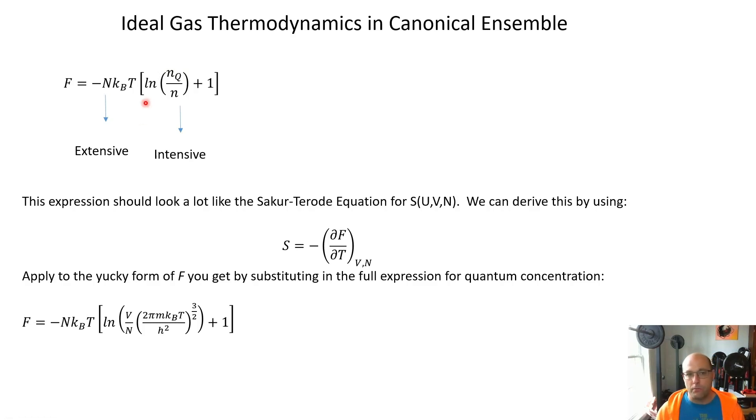Another thing that we should remark upon is the general appearance of this equation reminds us of the Sackur-Tetrode equation, which we derived for entropy as a function of U, V, and N back in chapter two. So we can actually re-derive it using what we've got now, but just applying entropy equals negative partial F partial T at constant V and N.